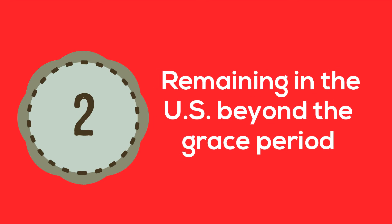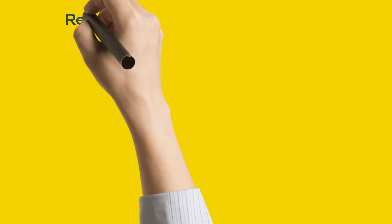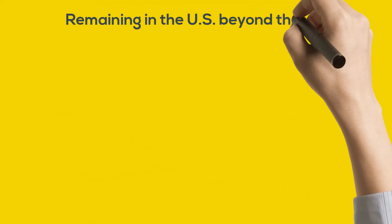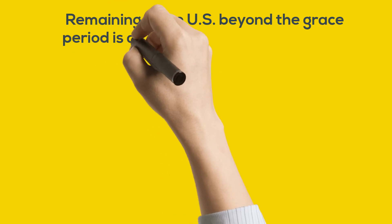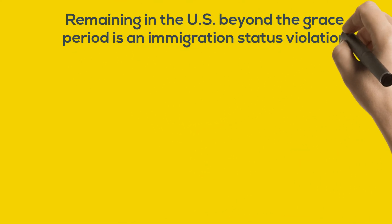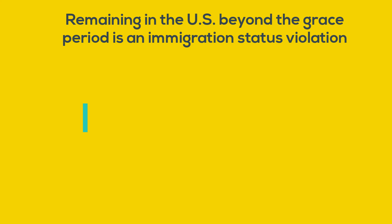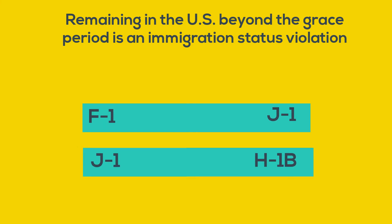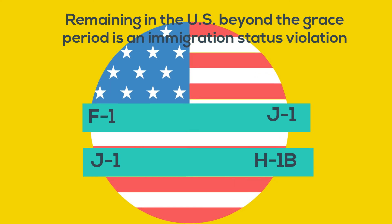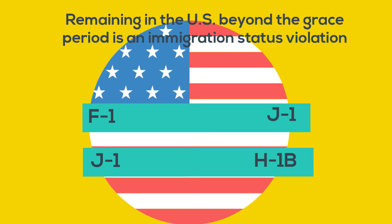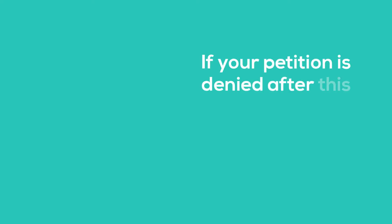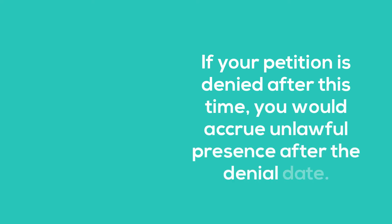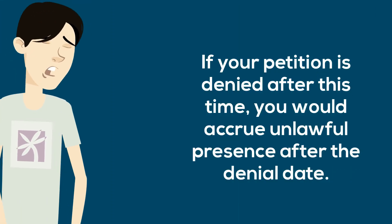Example number two: remaining in the U.S. beyond the grace period. Remaining in the U.S. beyond the grace period is an immigration status violation. One way it can happen is if you file for a change of status, such as changing from F-1 to J-1 or from J-1 to H-1B, without leaving the U.S., and it is still pending past your grace period. If your petition is denied after this time, you would accrue unlawful presence after the denial date.